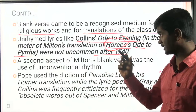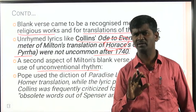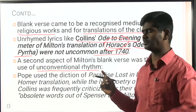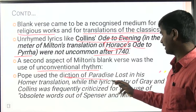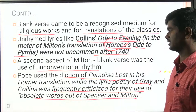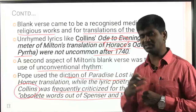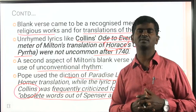A second aspect of Milton's blank verse was the use of an unconventional rhyme scheme — blank verse refers to iambic pentameter lines without any rhyme scheme. Pope used the diction of Paradise Lost in his Homer translation. Lyric poetry of Thomas Gray and William Collins was frequently criticized for their use of obsolete words of Spenser and Milton. Both Thomas Gray and William Collins were greatly influenced by Edmund Spenser, John Milton, and his use of blank verse.